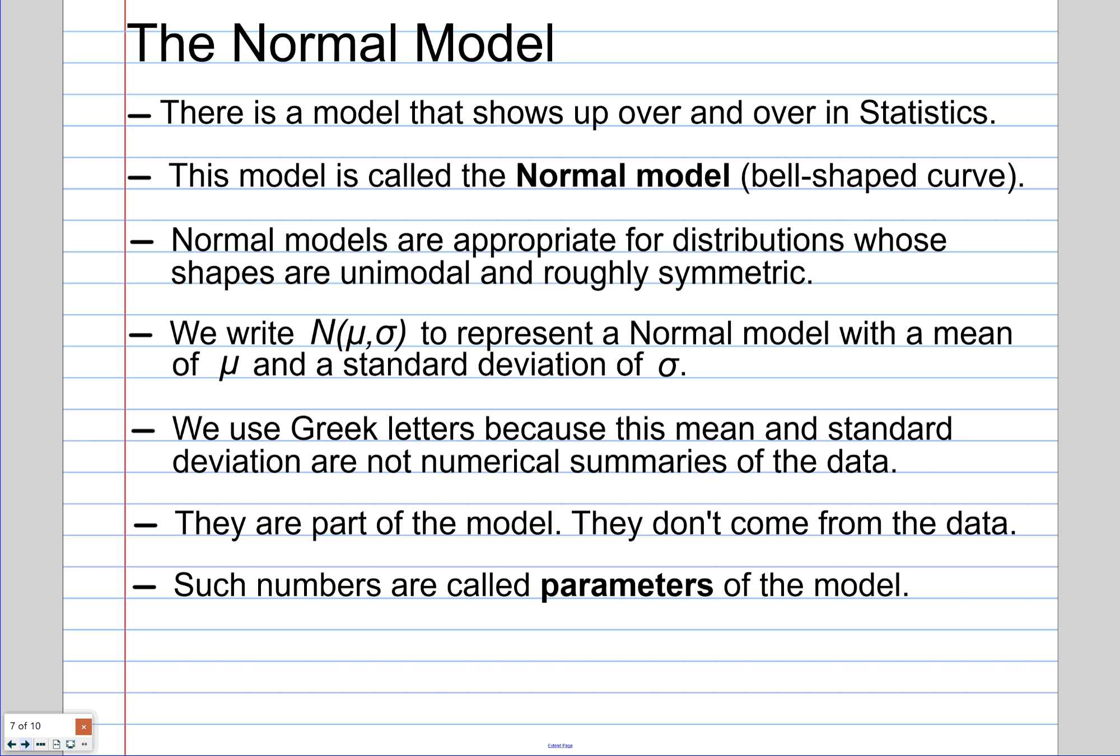So the first thing, if I circle this, that capital N is telling you that it's a normal model. The capital N stands for a normal model. Whenever you have a normal model, you have two what we call parameters. The mu and the sigma. Those are Greek letters. Mu and sigma. These are just the Greek letters for our M and S. That's all they are. Mu and sigma.